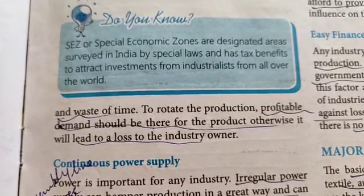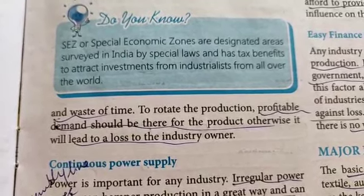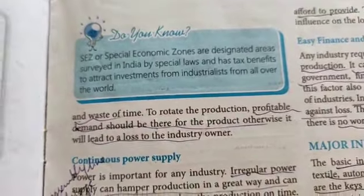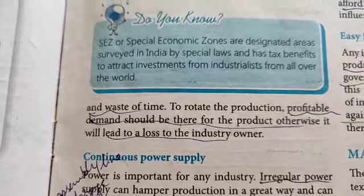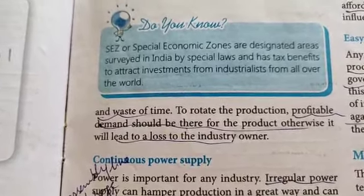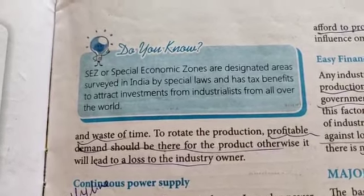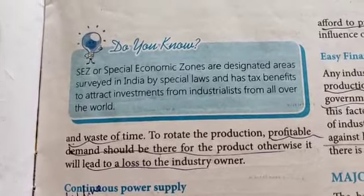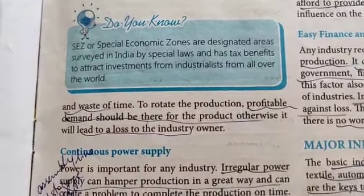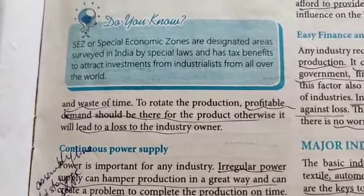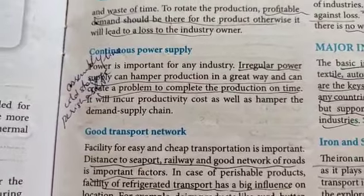Here they have talked about SEZ, or Special Economic Zones — designated areas governed in India by special laws that offer tax benefits to attract investments from industrialists from all over the world. To bring development to poor and backward areas, state governments offer incentives, tax benefits, and simplified laws to make it easier for people to set up industries there. This provides livelihood to local people and increases their standard of living.